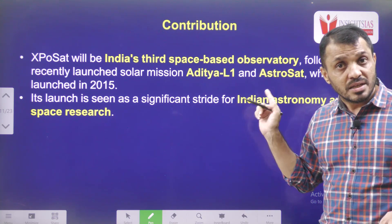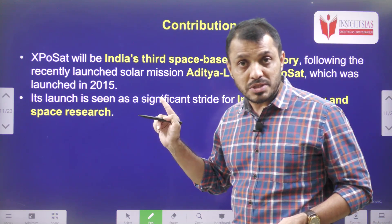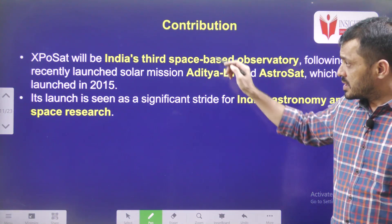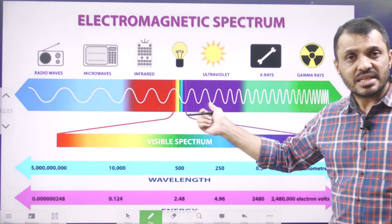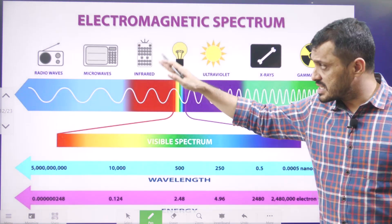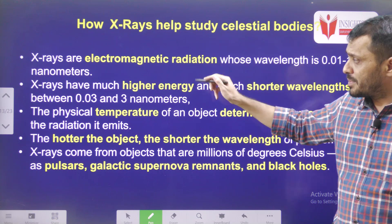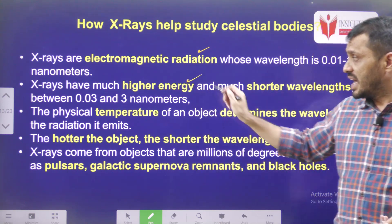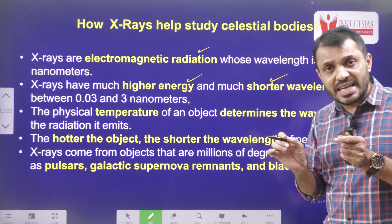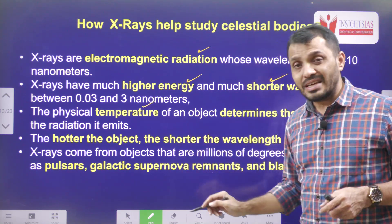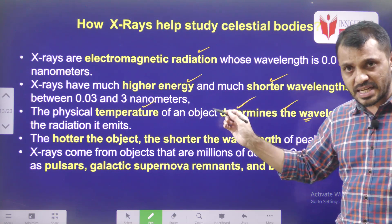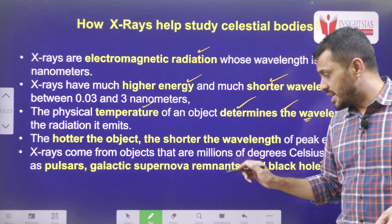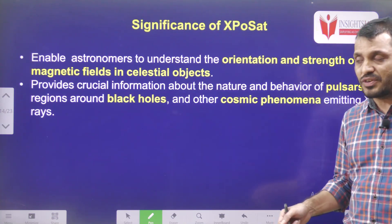XPoSat is the third space observatory from India — the first was AstroSat, the second was Aditya L1, and the third is the recently launched XPoSat. X-rays are at the end of the electromagnetic spectrum with the lowest wavelength, so they consist of very high energy and short wavelength. Generally, X-rays are emitted from any body having very high temperature. By studying these X-rays, we can understand the source and study various phenomena like black holes, supernova, and other events in space.